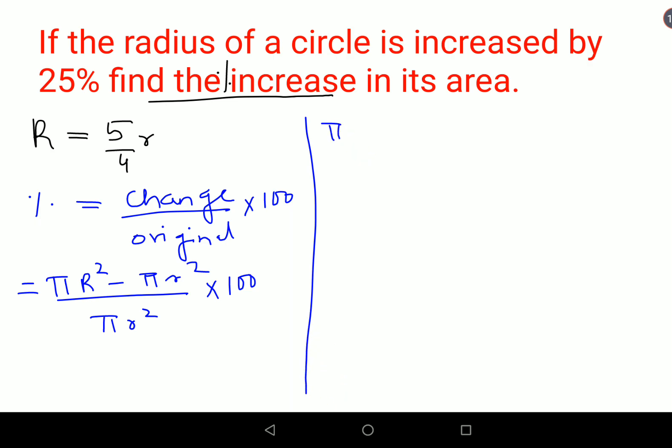So now let's take pi outside. I am left with capital R square. Instead of capital R square I will write this as 5 upon 4 into small r the whole square minus r square upon pi r square into 100.